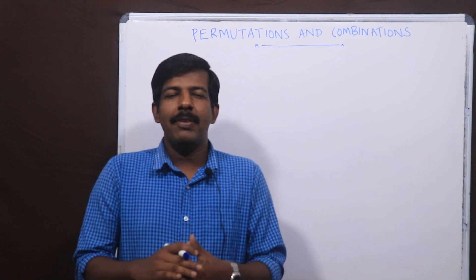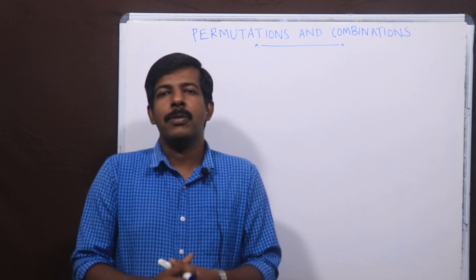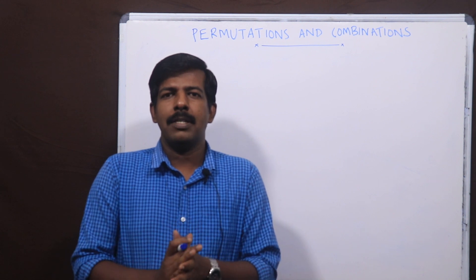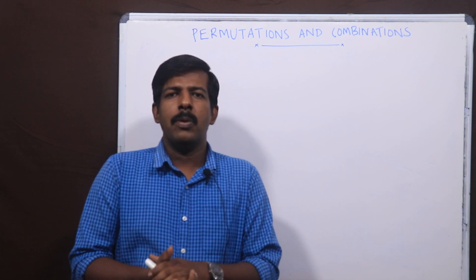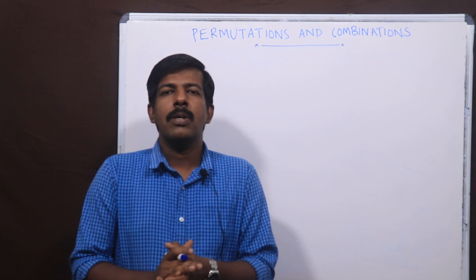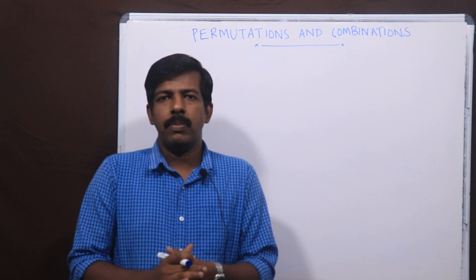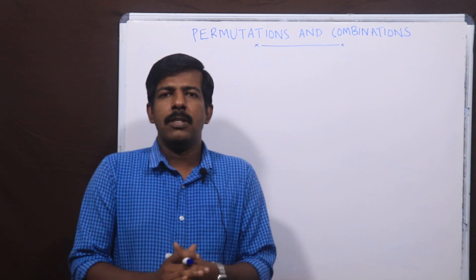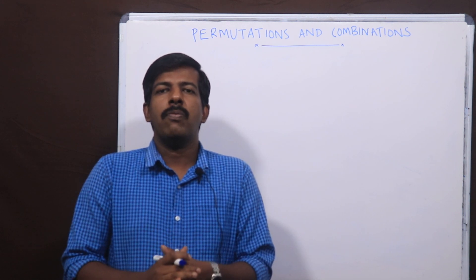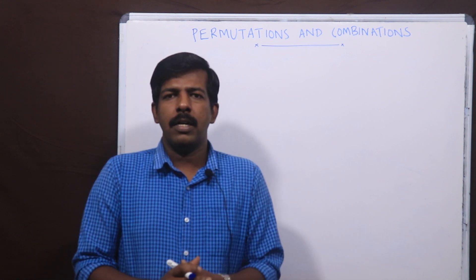Hi! In this video, we will discuss the first XI solution of permutation and combination. Permutation and combination is very difficult for a lot of students. We have discussed the first part using a real-life model, applying combinations and selections. In this case, there are some formulas. We have to apply the fundamental principle of counting. There are six questions we will solve.